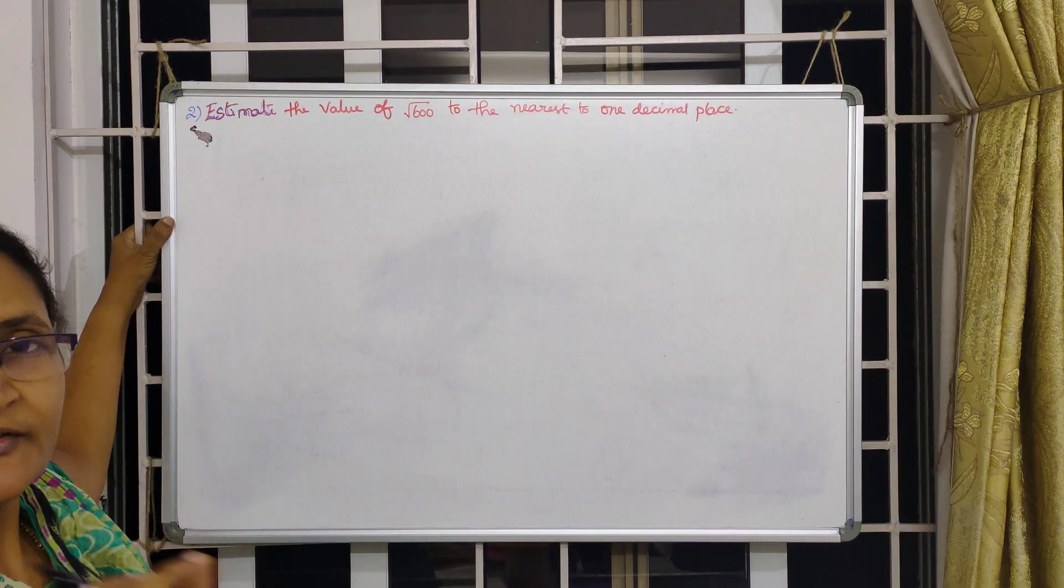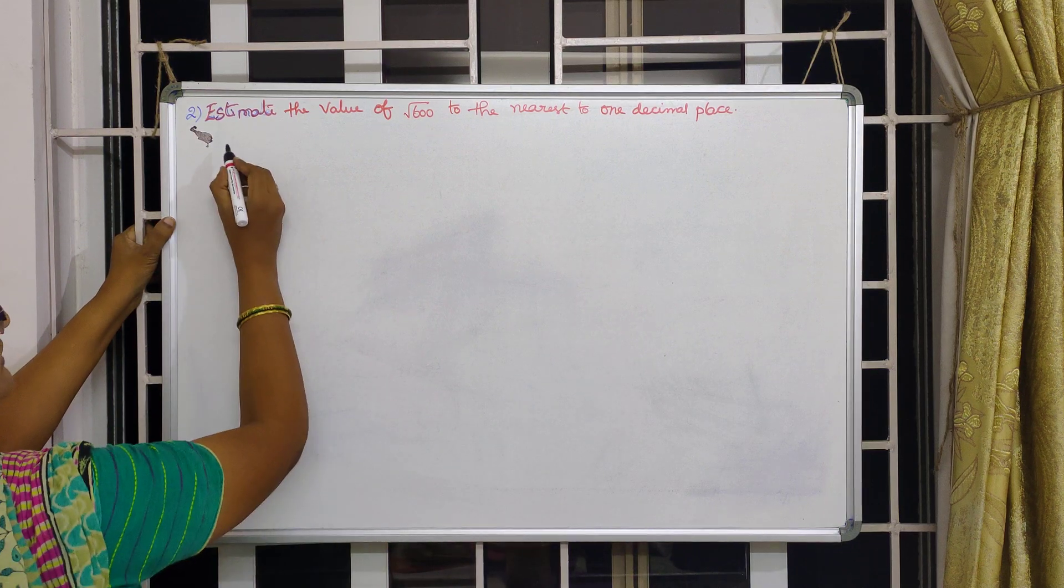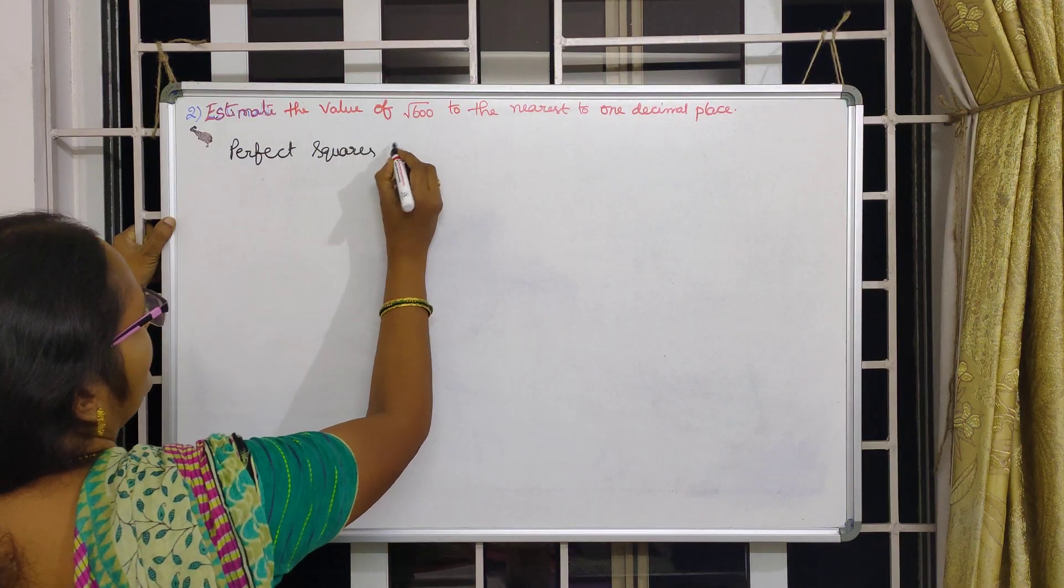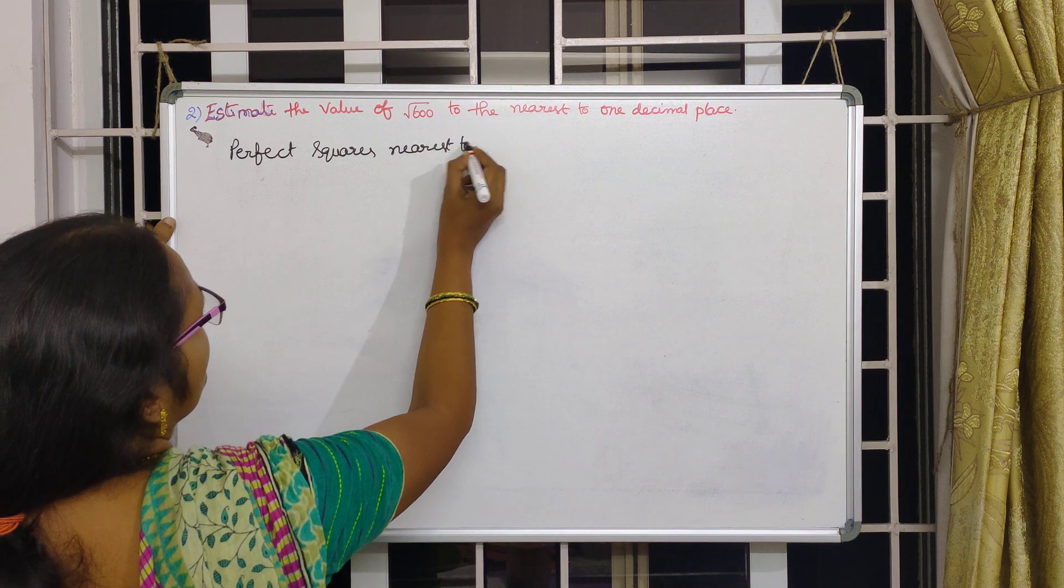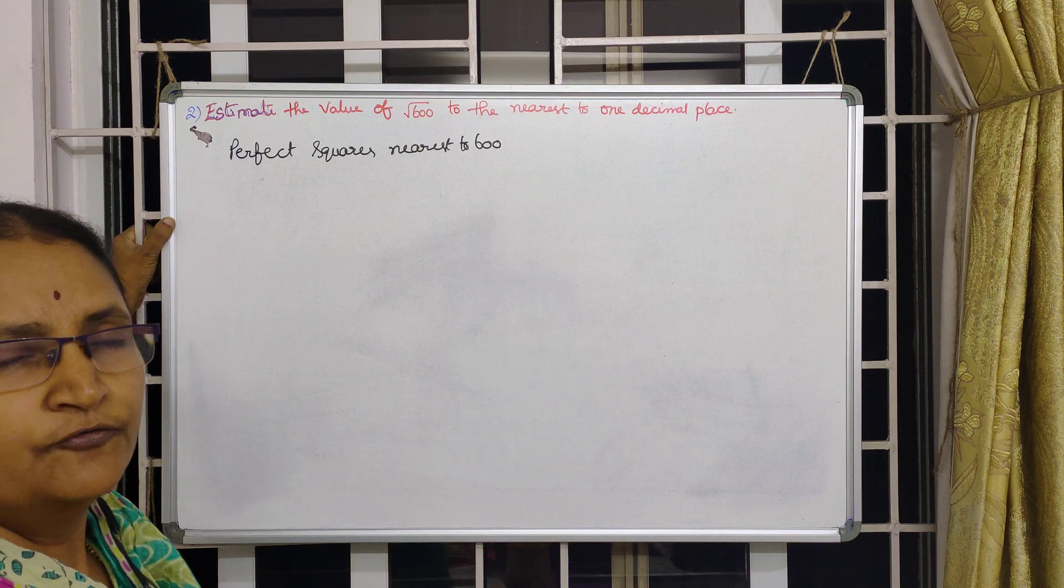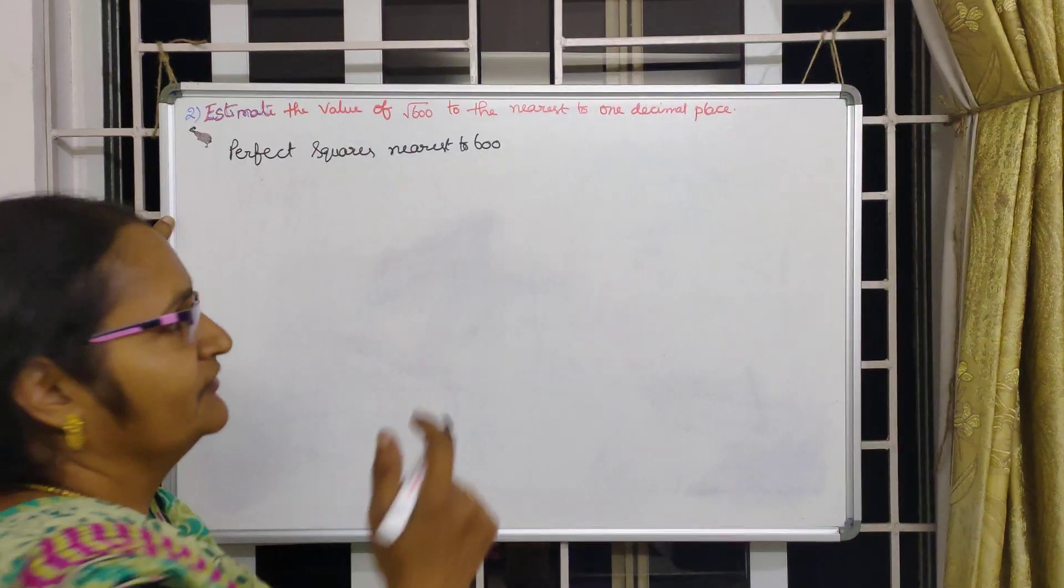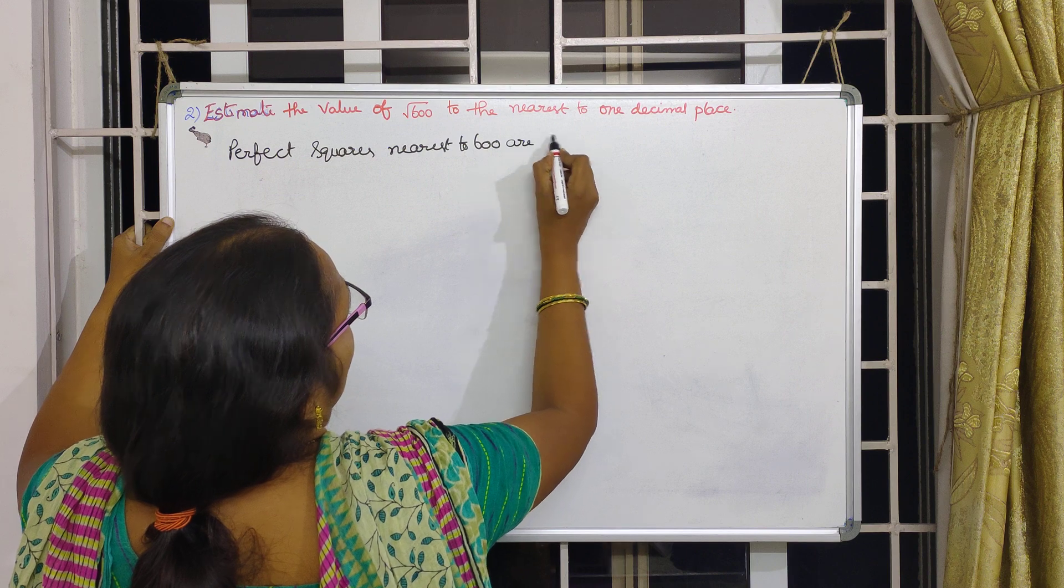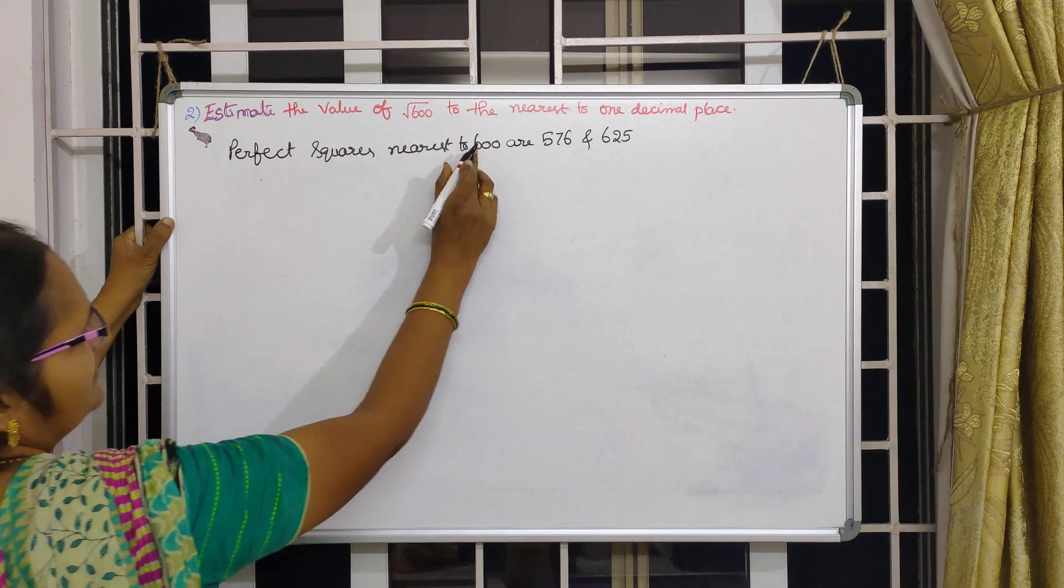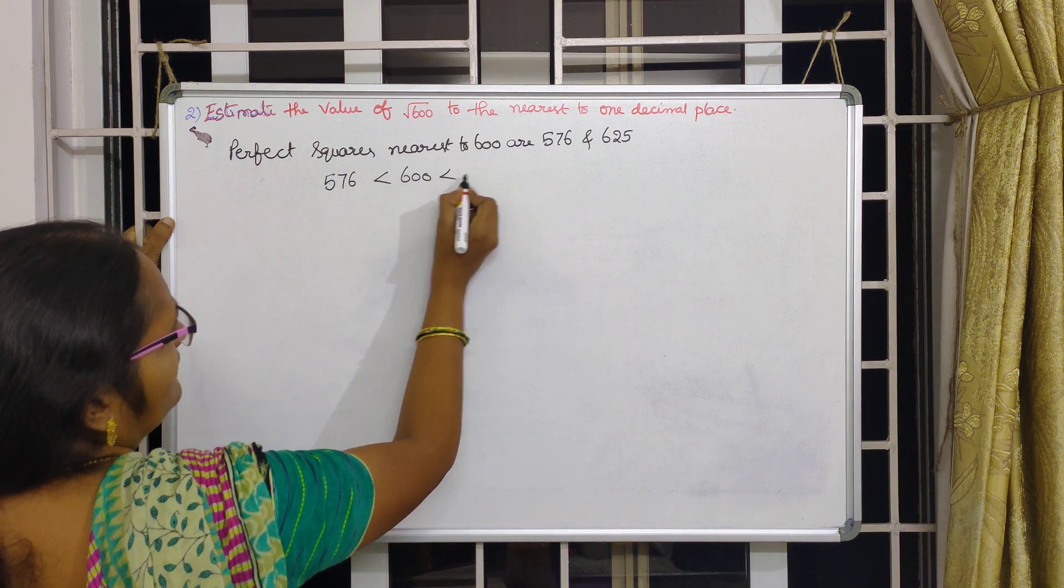In this estimation, first let us find out the perfect squares nearer to 600. What are the perfect squares nearer to 600? 24 square is 576 and 25 square is 625. That means 600 lies between 576 and 625.